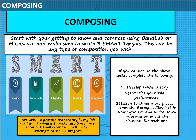I want you to start creating a composition — we can use this as evidence if needs be, so do put quite a bit of effort into it. I also want you to write three smart targets as you're going through. If for whatever reason you can't complete that composition on BandLab or MuseScore, I'd like you to develop your music theory, practice your solo performance if you can, and then create some wider listening — listen to three more pieces from the Baroque, three from the Classical and three from the Romantic era, and write down as much information about each of the elements as you can. Remember, we have our Teams session next lesson on period two, so do make sure that you are ready for that with your booklets and any questions. Look forward to seeing you all soon and good luck.